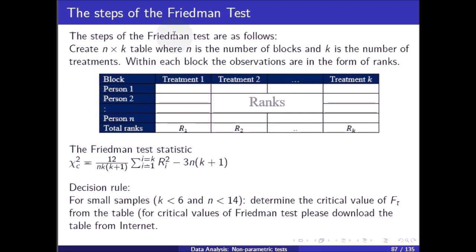The steps of the Friedman test are as follows: create an n × k table where n is the number of blocks and k is the number of treatments. Within each block the observations are in the form of ranks. The Friedman test statistic is chi-square.